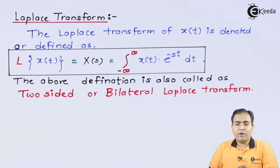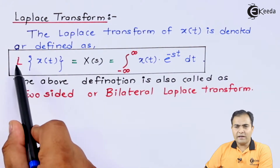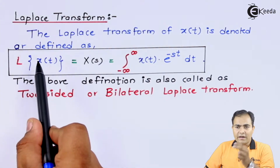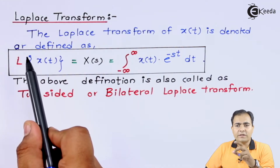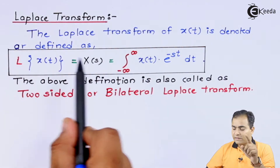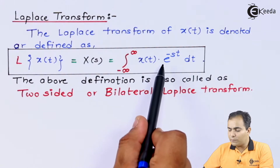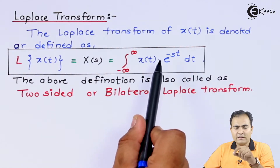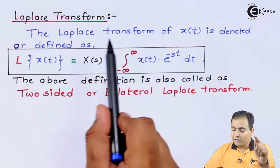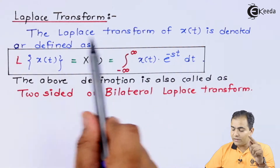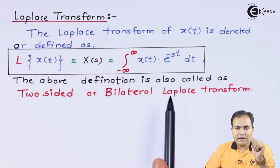Let us see the definition. The Laplace Transform of X(T) is represented as X(S). According to the definition, we multiply X(T) with the exponential function e to the power minus S·T with respect to time dt, and this time varies from minus infinity to infinity. Because the time varies from minus infinity to infinity, this equation is referred to as the two-sided or bilateral Laplace Transform.